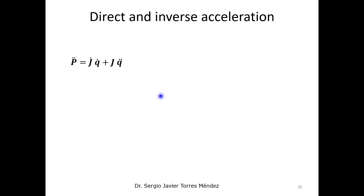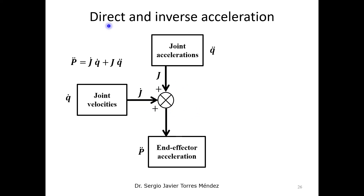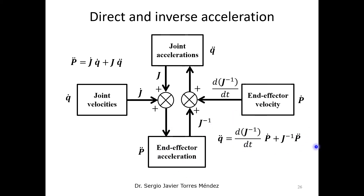In a block diagram, it is possible to have a graphical view of how we relate the direct and inverse accelerations. For the direct acceleration, you receive as input the joint velocities and joint accelerations, and with the Jacobian matrix and its derivative, you can obtain the end-effector accelerations. For the inverse model, you receive the end-effector velocity and end-effector acceleration, and with the inverse Jacobian matrix and its derivative, it is possible to obtain the joint accelerations — if and only if we have the same number of degrees of freedom as end-effector coordinates.